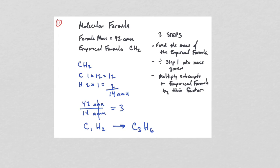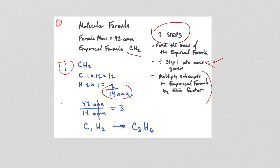For the molecular formula — question 11 — it's also a three-step process. Step 1: find the mass of the empirical formula. Step 2: divide the given gram formula mass (42) by the empirical formula mass to get a whole-number factor of 3. Step 3: multiply all subscripts in the empirical formula by that factor. So CH₂ becomes C₃H₆.